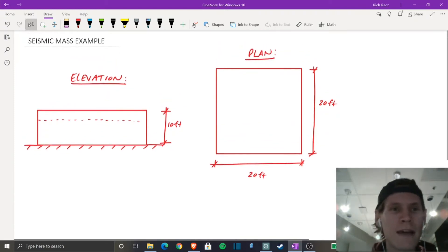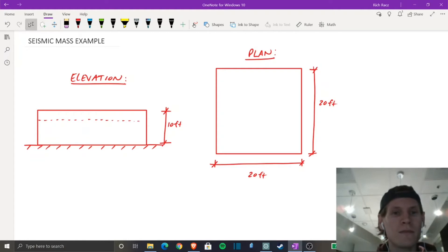All right, so we have here two views, elevation and a plan view. Plan is on the right as denoted. Elevation is on the left. We have a perfectly square building. So this is going to be really simplistic just to drive the point home of how we determine our mass. So plan, we have a 20-foot by 20-foot building, and then in elevation, it's 10 feet tall.